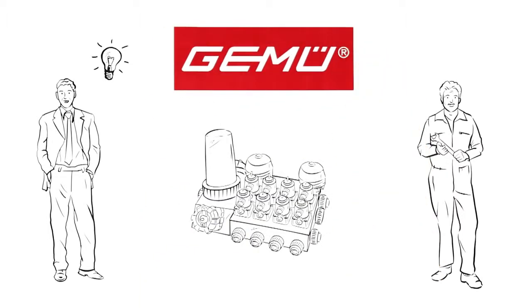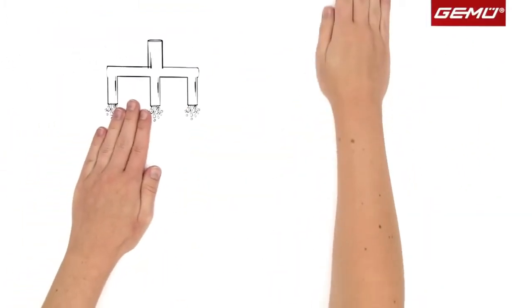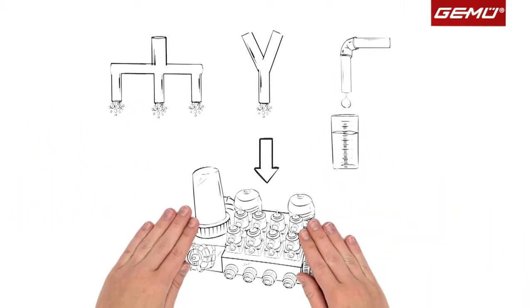With these valve blocks, the functions of a conventional system, for example distribution, mixing, and dosing, can be integrated into the smallest possible space.